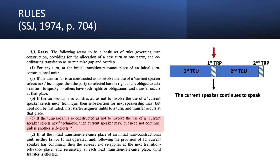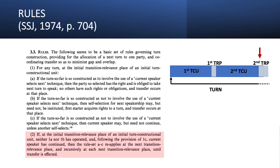I've been using TRP and TCU so much — it's intentional. I want you to get familiar with the terms and implant them as part of your habit. Rule 2 basically says that the same Rules 1A, B, C apply again at the second TRP, and recurrently at the third, fourth, and the next TRP, until the current speaker stops talking and a speaker change takes place. If that happens, then a turn is materialized. That was the rules — pretty simple, right?